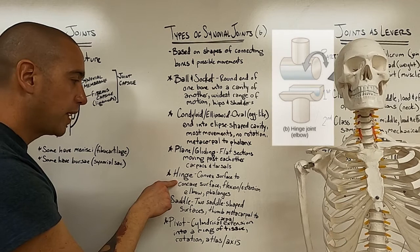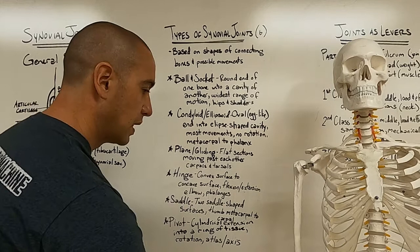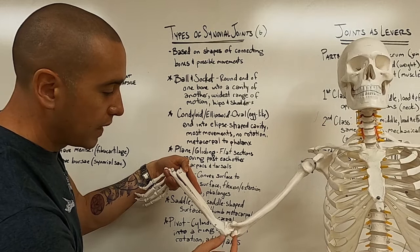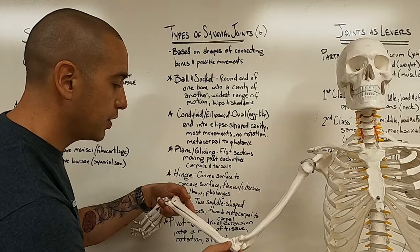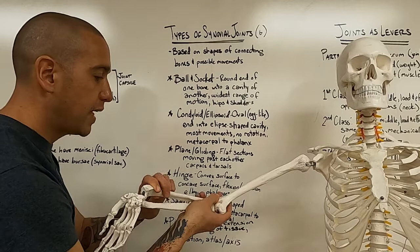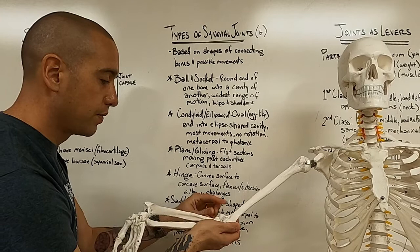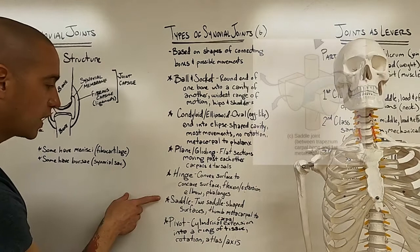Hinge joints are next. It's where a convex surface goes into a concave surface. An example would be here with the humerus and the ulna. So you can see the convex and the concave. And it really just allows for flexion and extension. The rotation of the lower arm is not due to this joint, but it's due to the radius and this part of the humerus. The joints of the phalanges are also this type.